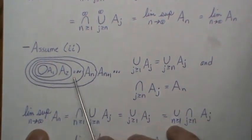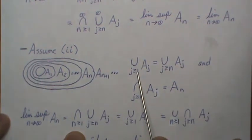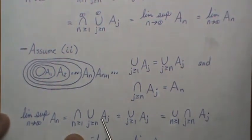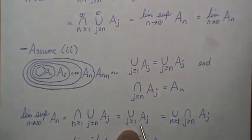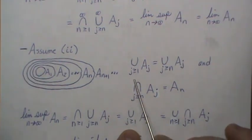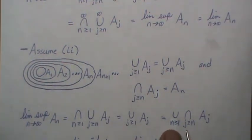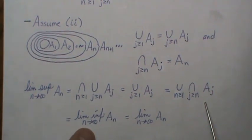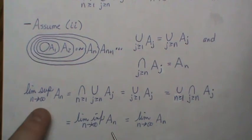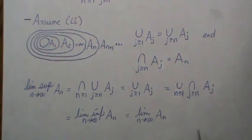For the limit supremum of this non-decreasing sequence, the union of A_N starting at n is the same as starting at 1, so we substitute that in. With no remaining index, intersecting the same thing infinitely many times gives it back. We then express that A_n as an intersection using the second property, which gives us the limit infimum of A_N. So on a monotone non-decreasing sequence of sets, the limit supremum and the limit infimum are equal, and we call that the limit of A_N.